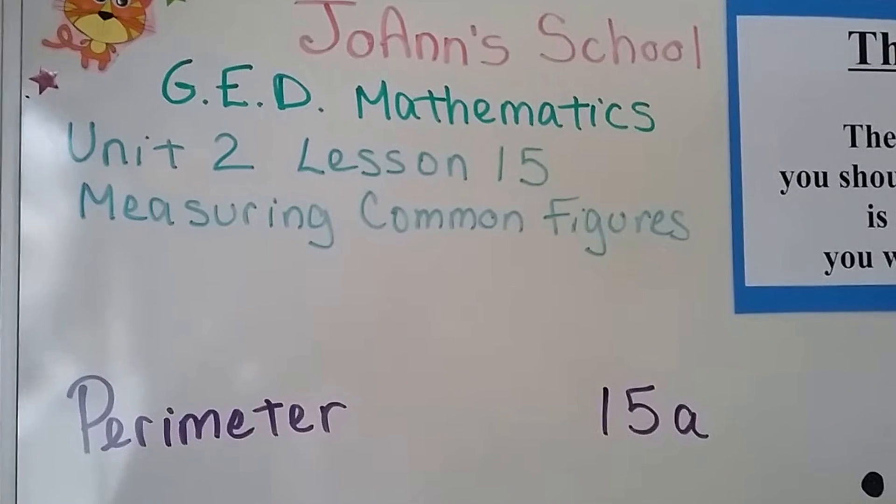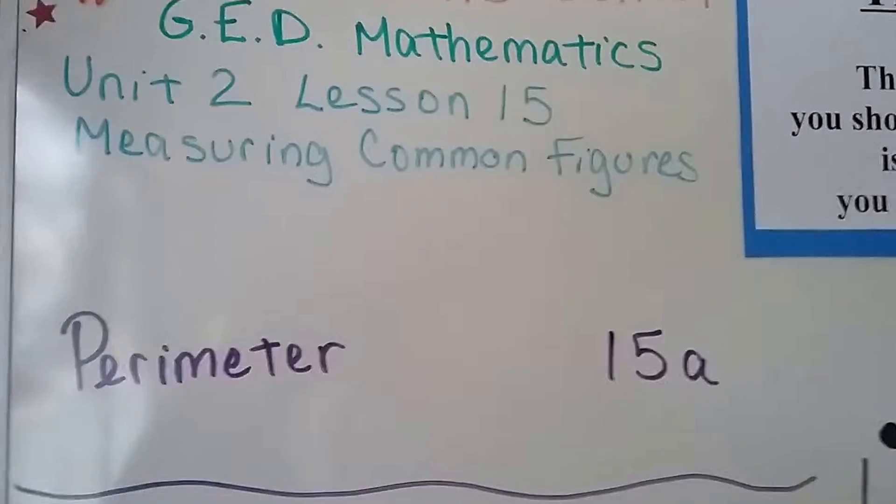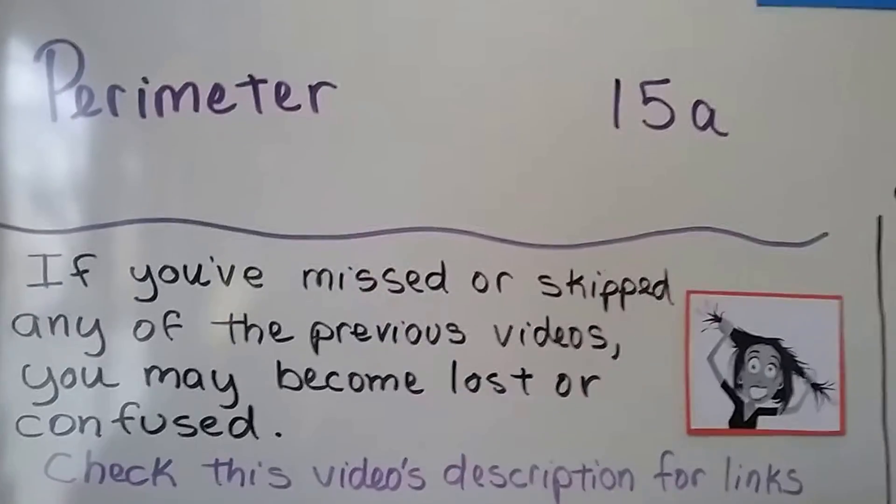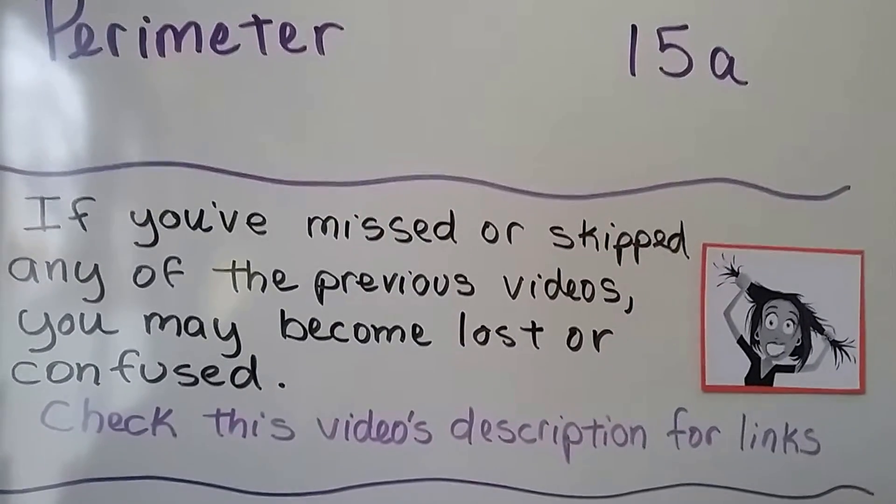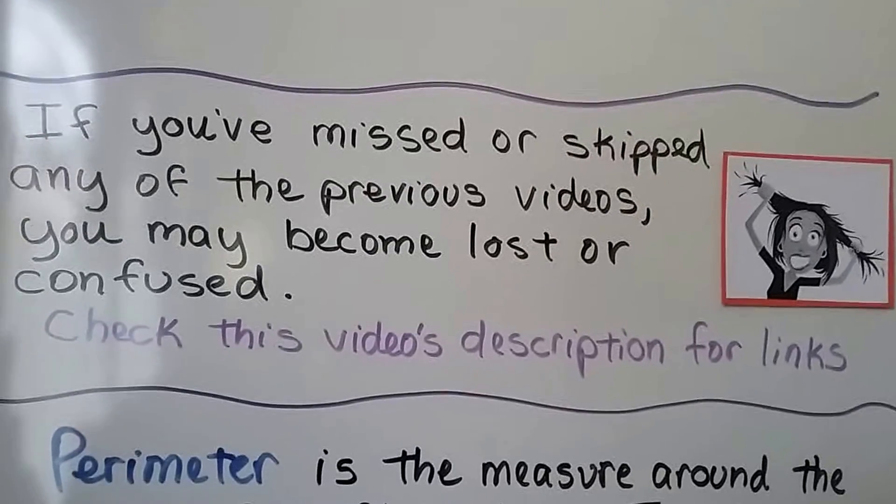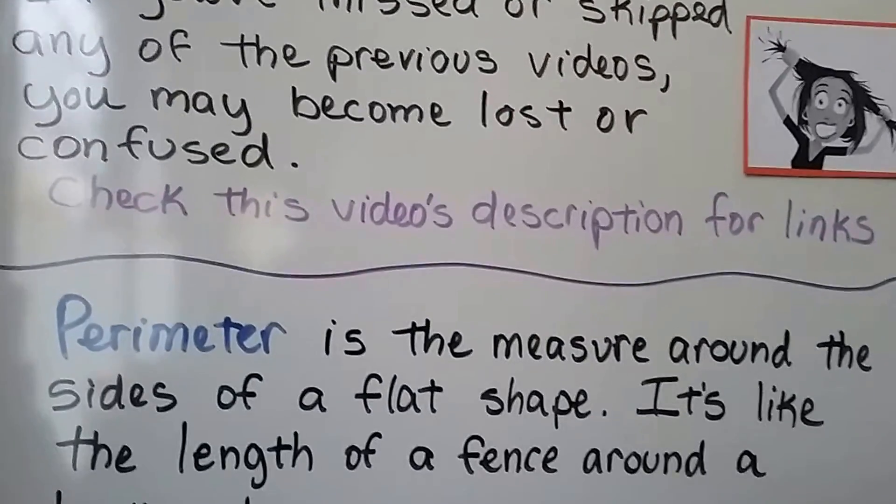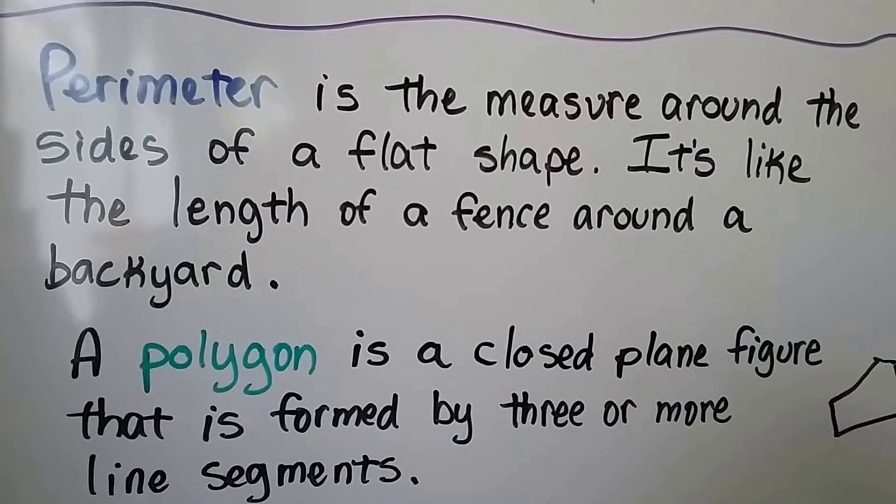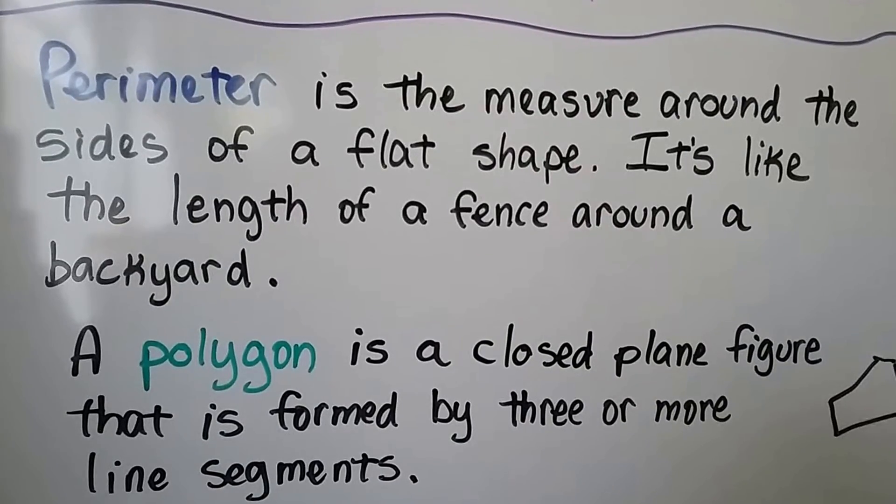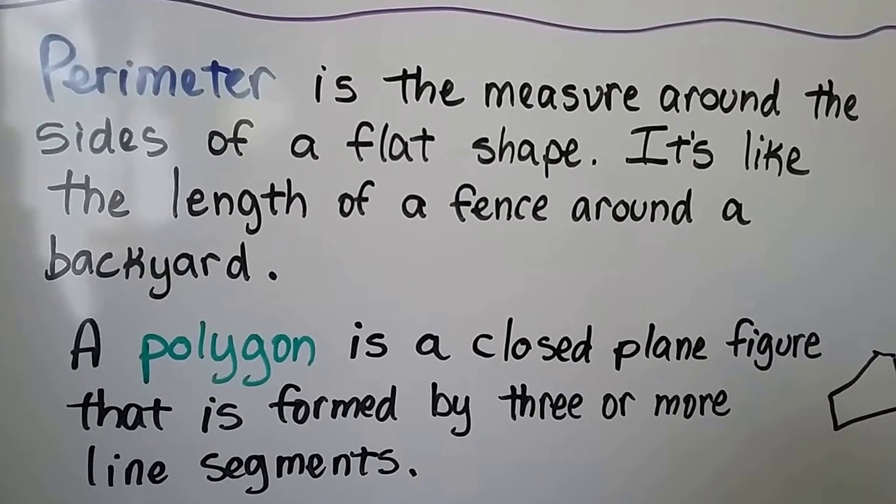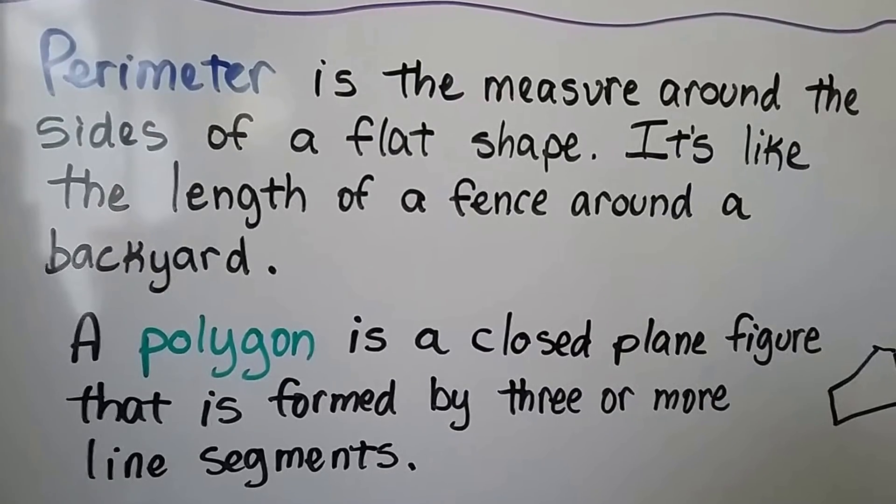This video is all about perimeter. It's lesson 15a and remember that there's links in the description in case you need them. Don't want you to get lost or confused. Perimeter is the measure around the sides of a flat shape. A flat shape is a plane. It's like the length of a fence around a backyard.